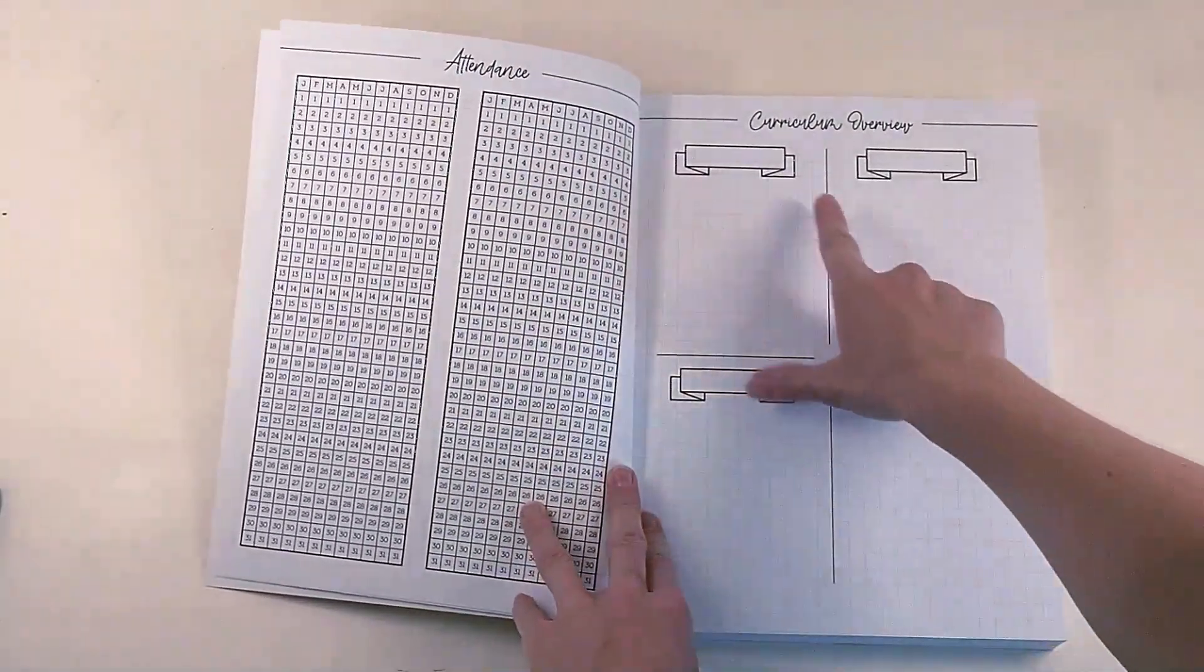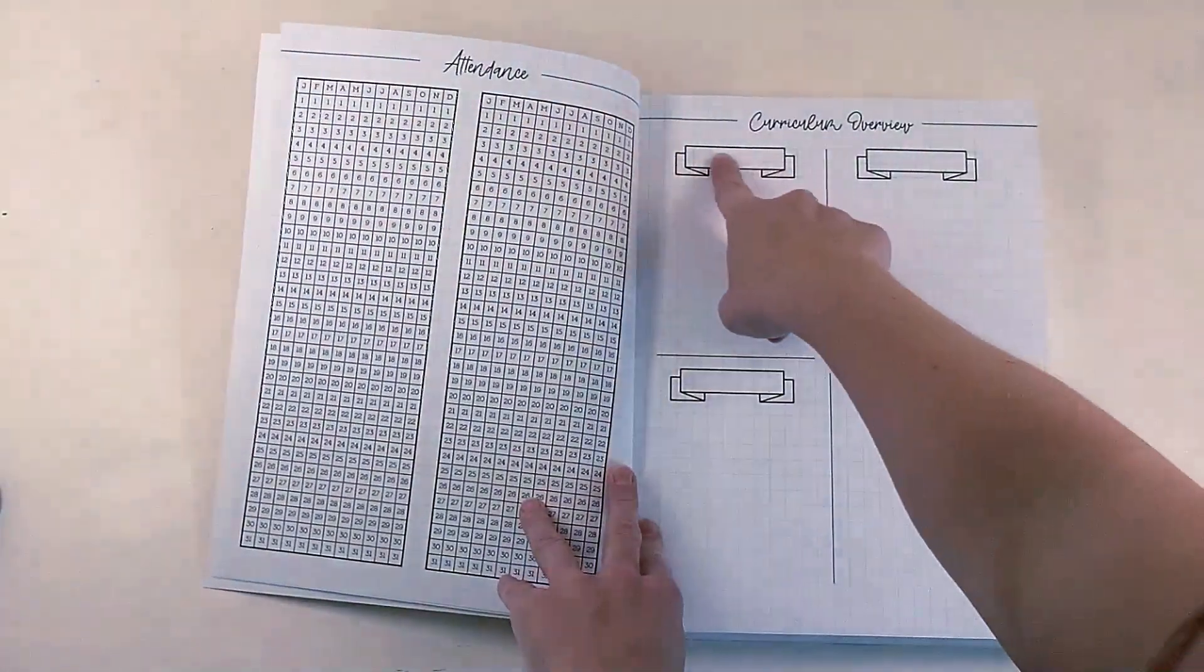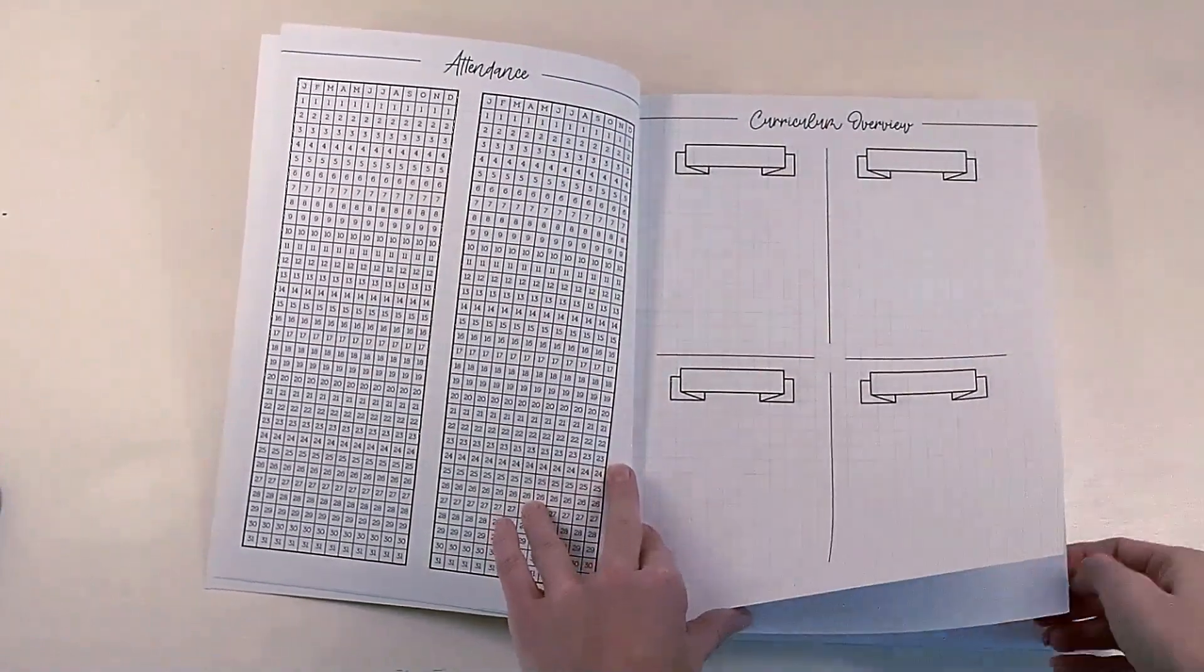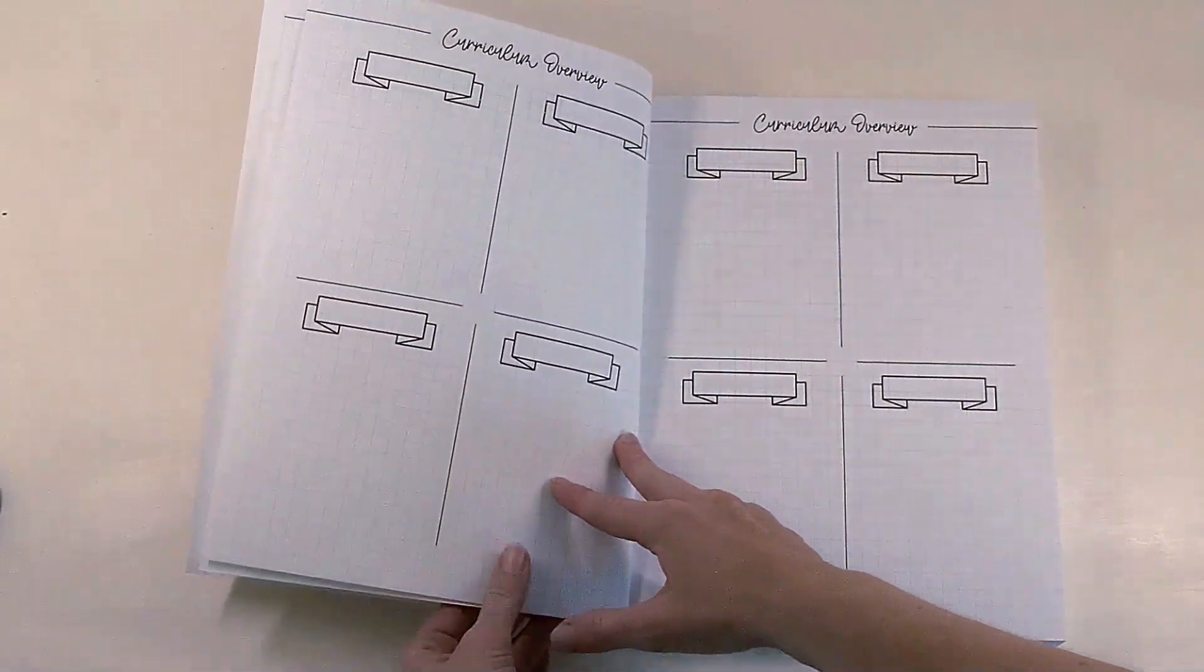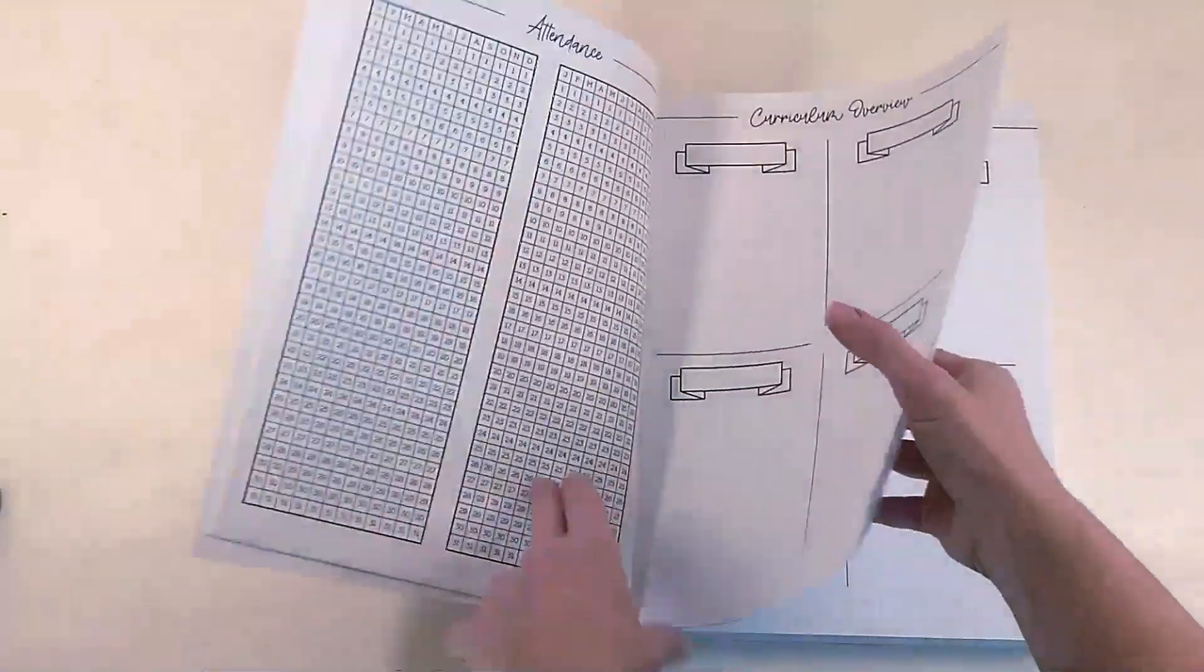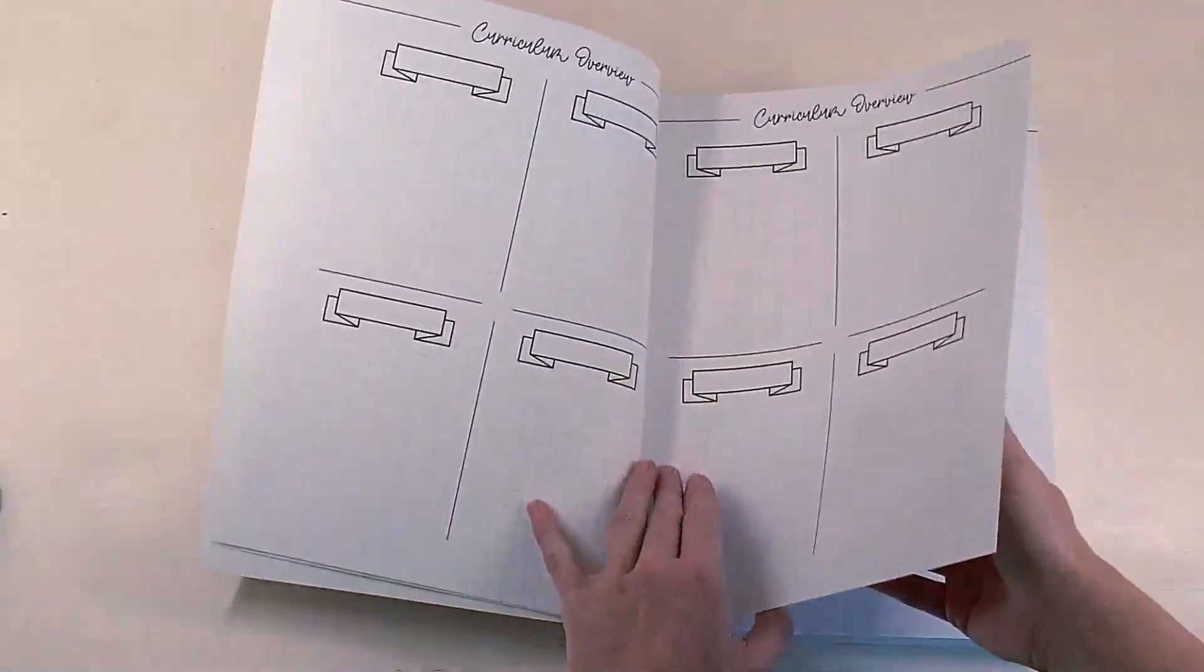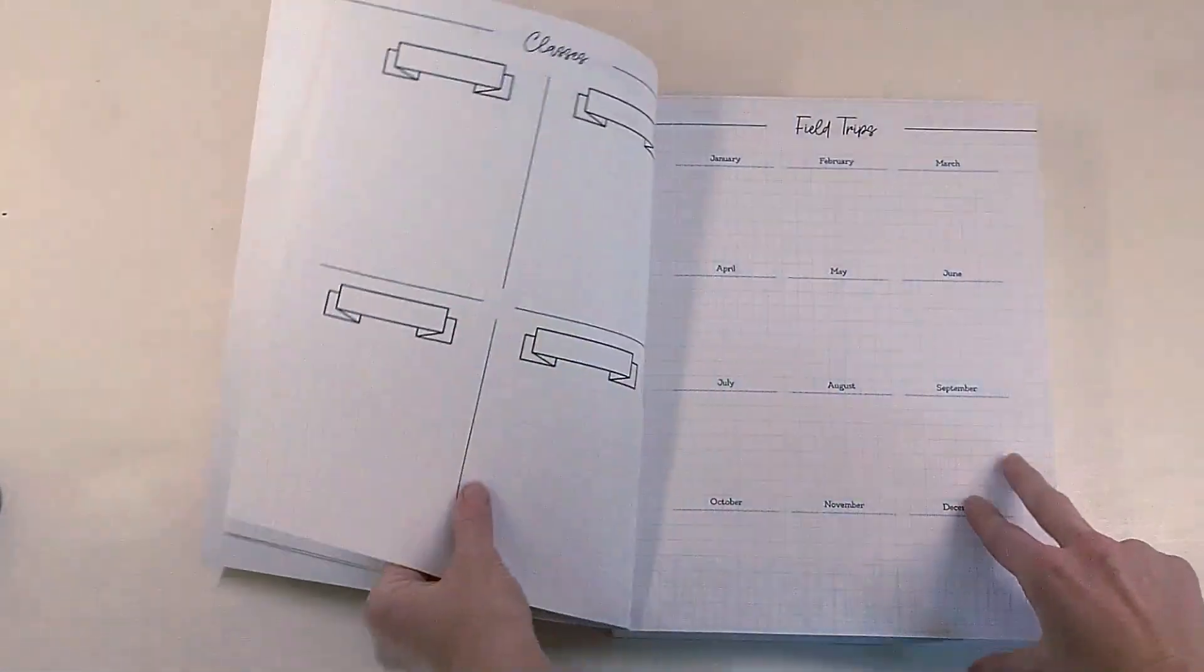We have curriculum overview where you can write in the curriculum and any notes you have, or the subject and curriculum ideas that you have for that subject or student. However you want to organize it, you have a space for your curriculum here, and actually a very generous amount of space for it. Five pages dedicated to curriculum, which is awesome. If you have a lot of students, you're going to need a lot of places to organize this.